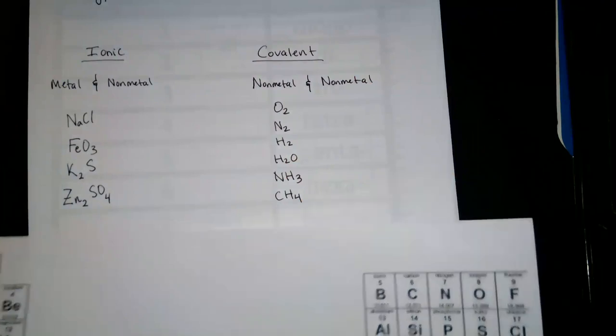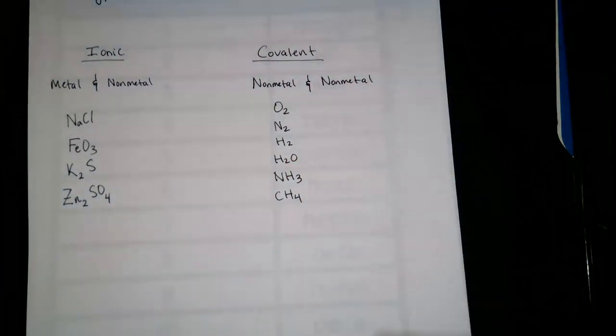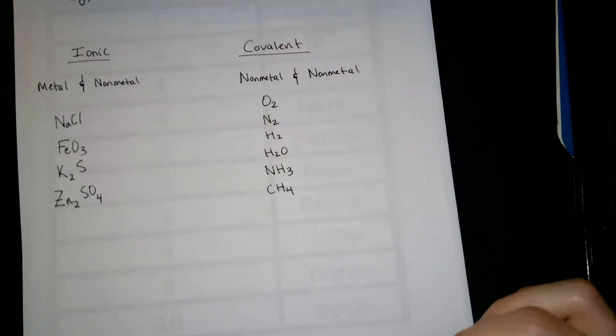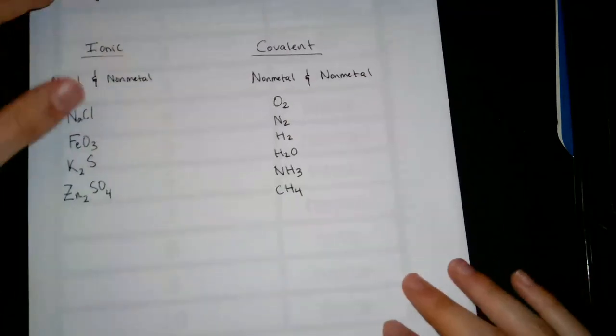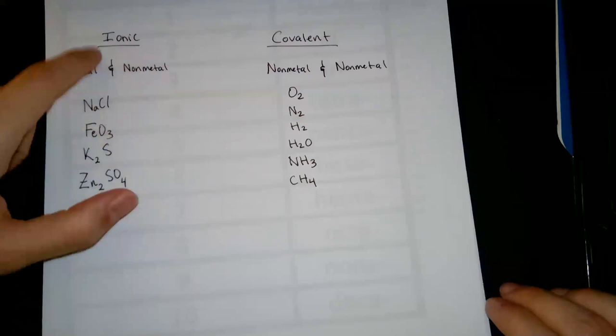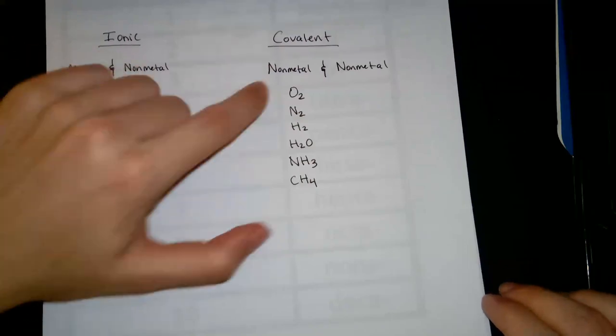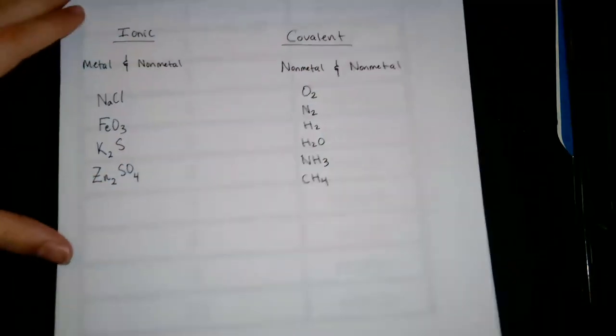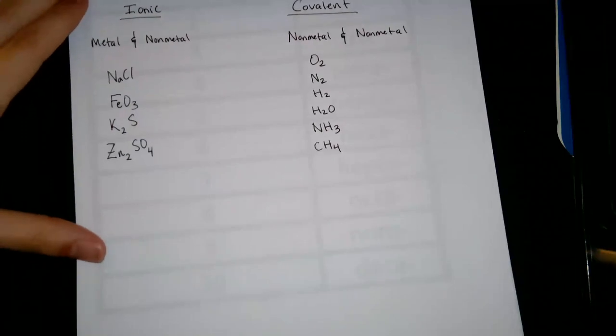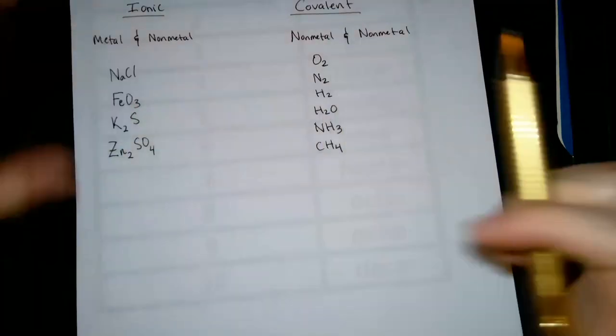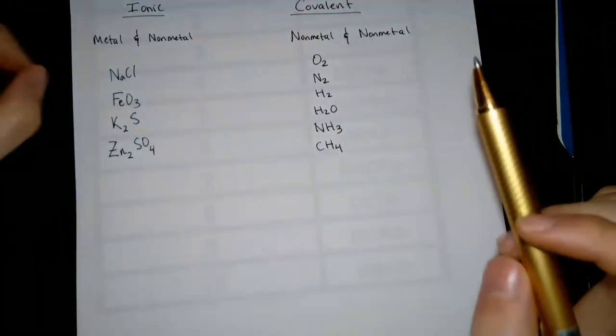And so that's the basic kind of what is ionic, what is covalent. So generally, it's a metal and a non-metal for ionic and covalent, non-metal, non-metal. And we'll kind of just explain it shortly, but we'll see this later on.